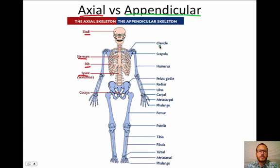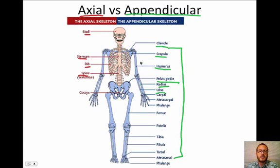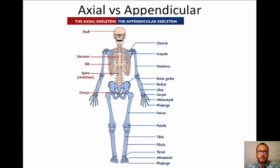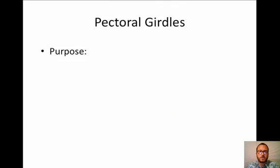The appendicular skeleton includes things like the pelvic girdle, radius, ulna — everything shown in blue on the picture. These are the parts attached to the axial skeleton. Our first focus in the appendicular skeleton is going to be the pectoral girdles.